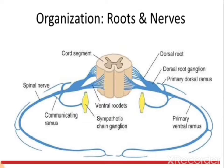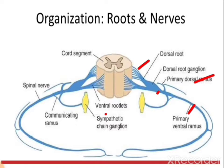Regarding the organization of roots from the spinal cord: from the anterior grey column arise the ventral rootlets, and from the posterior grey column arise the dorsal roots. These roots combine to form a trunk, which then bifurcates into the primary dorsal ramus on the posterior side and the ventral ramus on the anterior side. The dorsal ramus supplies the posterior side of the body and the ventral ramus supplies the anterior side.